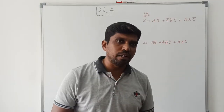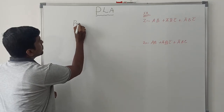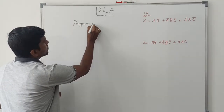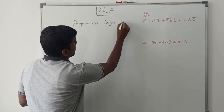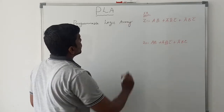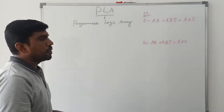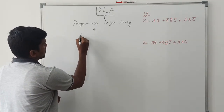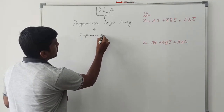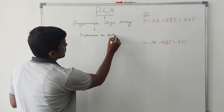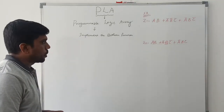So what is the abbreviation of PLA? PLA stands for Programmable Logic Array. This device is mainly used to implement Boolean functions, specifically in SOP form — sum of product.